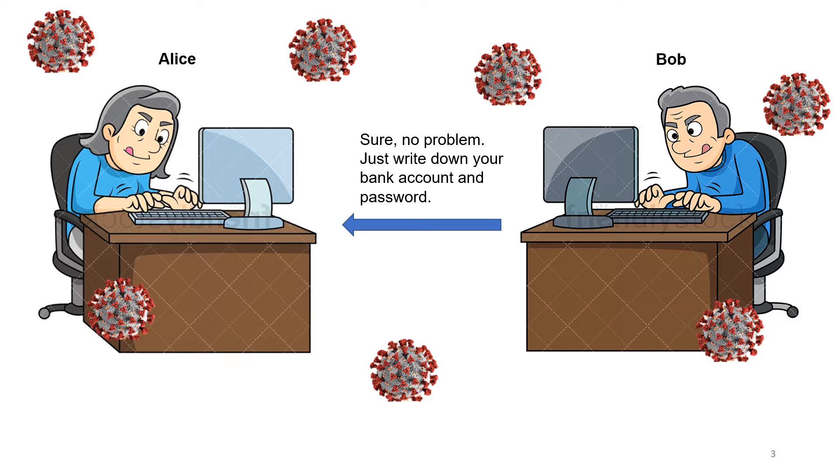Now, the problem is that Bob is transferring the money. He doesn't really know if that is really Alice on the other side, or it might have been that someone else got to her bank account details.